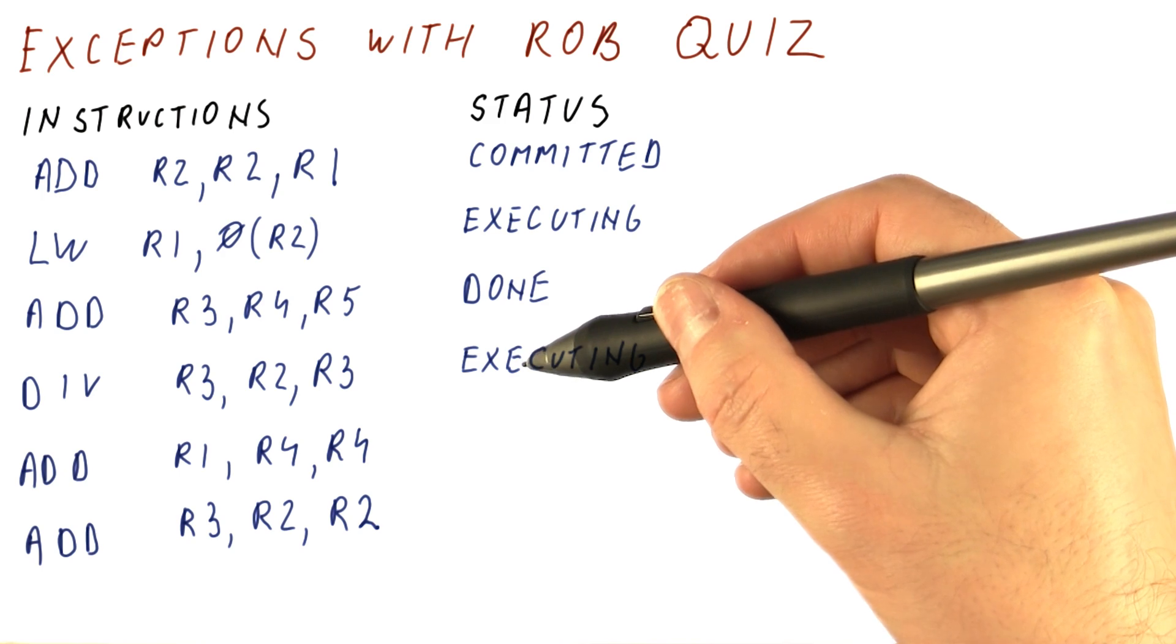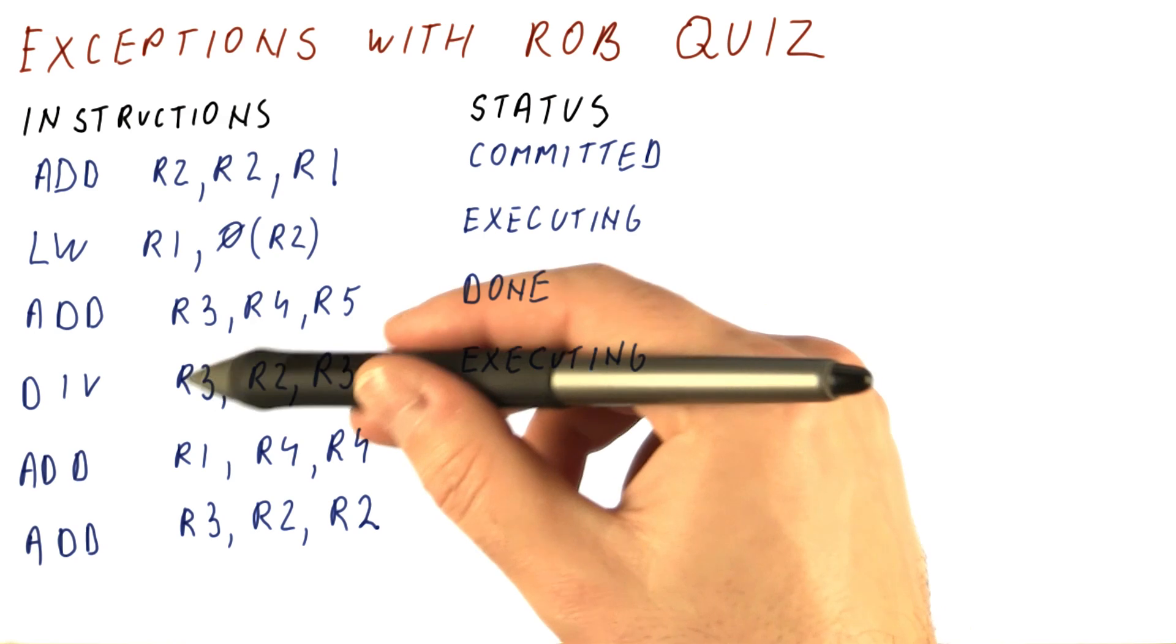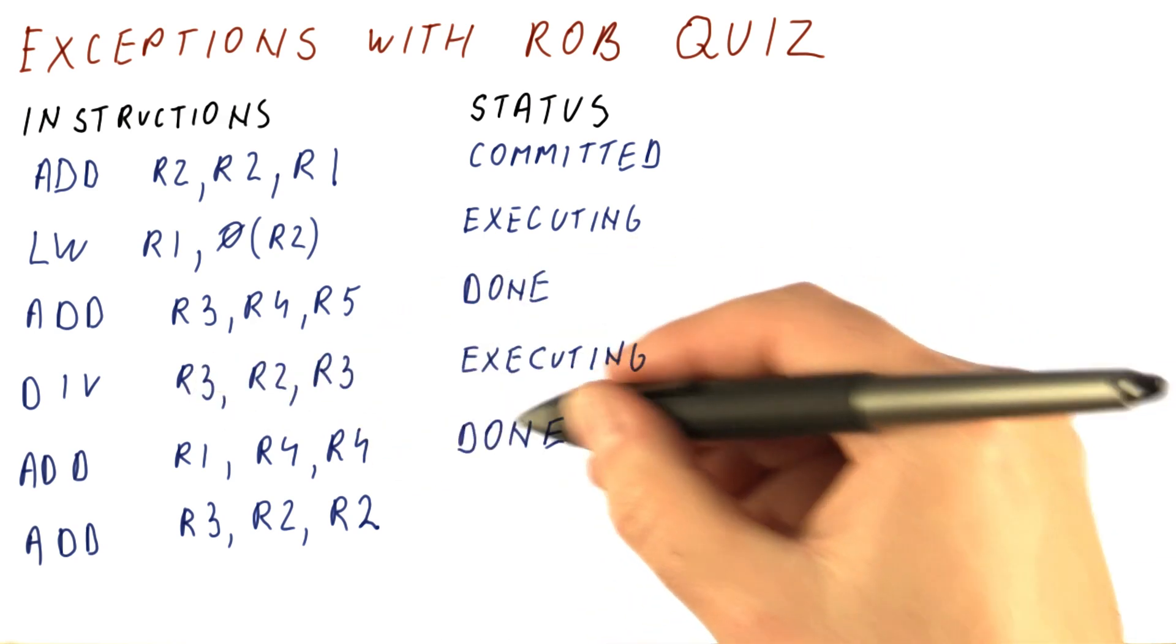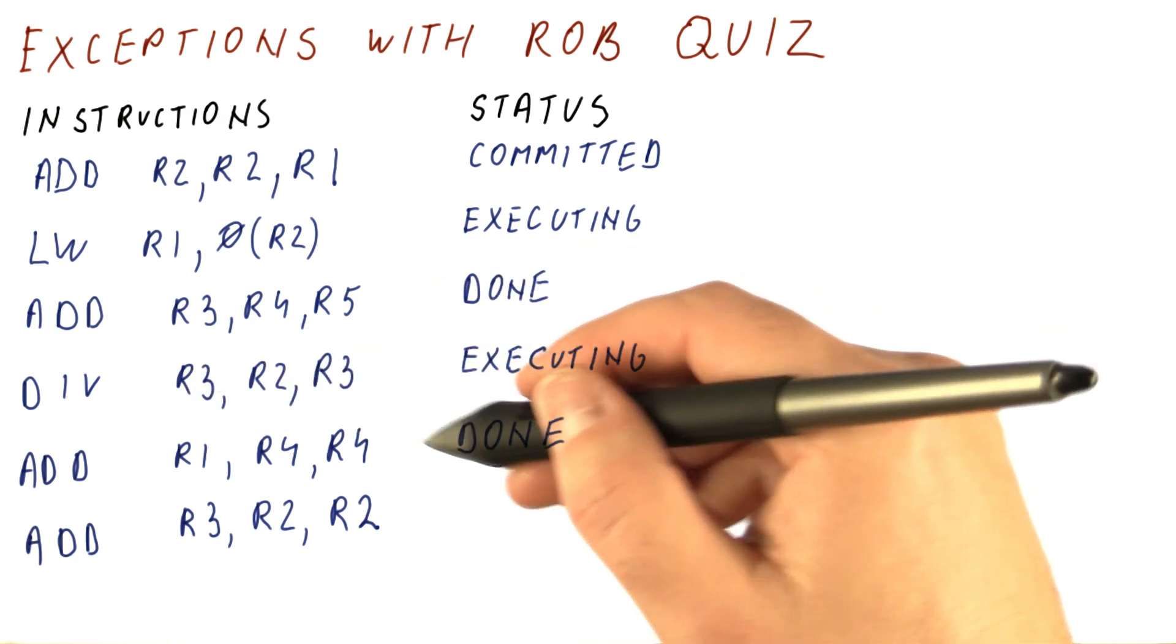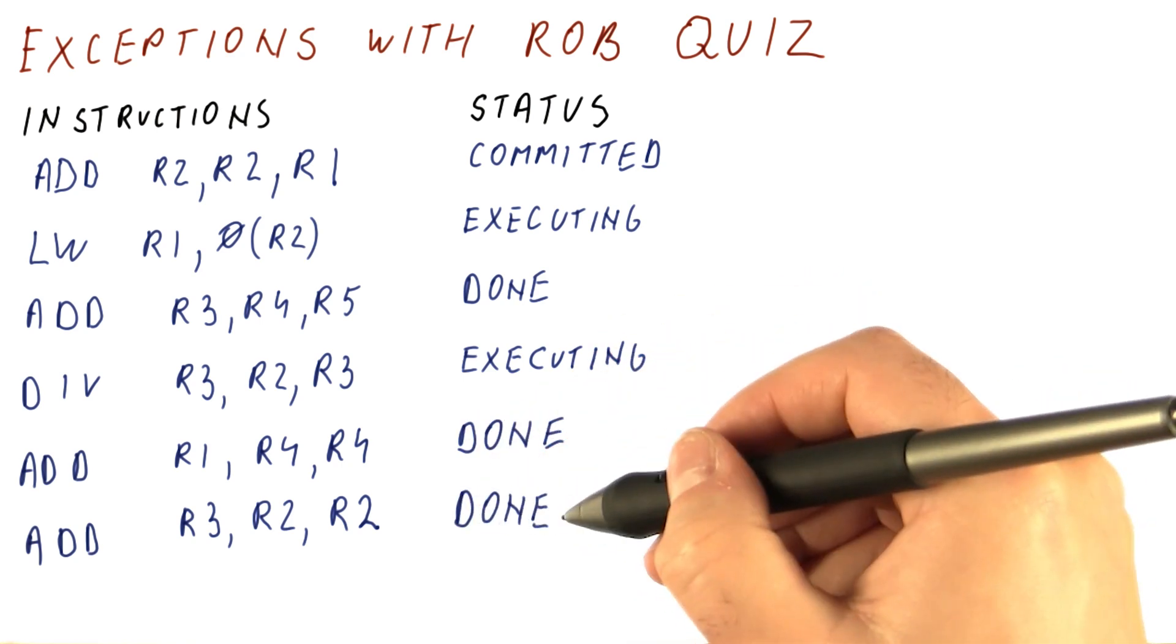The divide is also executing like the load here, meaning it has read these registers and now it's slowly computing its result. This add is done, meaning it has computed its result but it still hasn't committed and this add is also done.